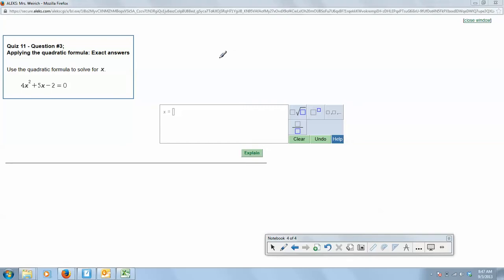This problem is called applying the quadratic formula exact answers. We want to use the quadratic formula to solve for x, and we have 4x squared plus 5x minus 2 equals 0.